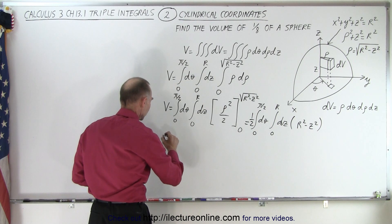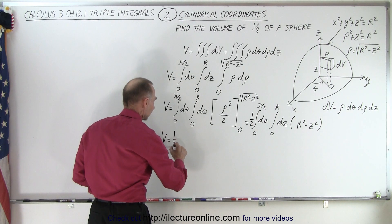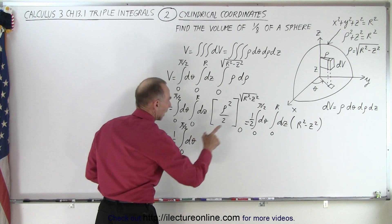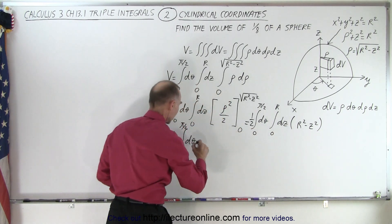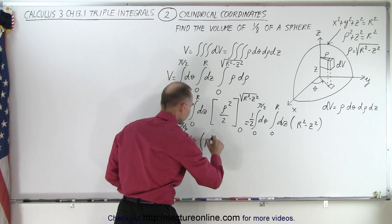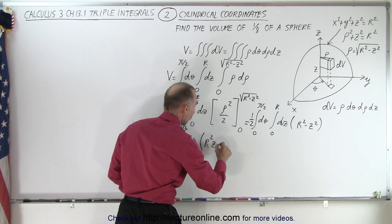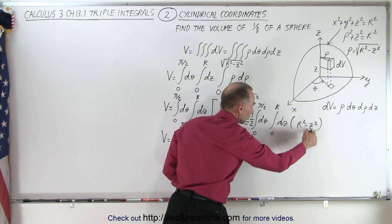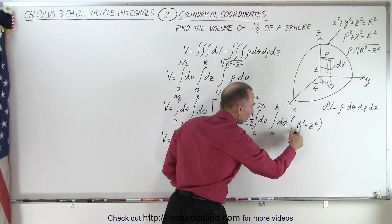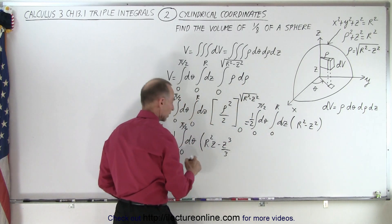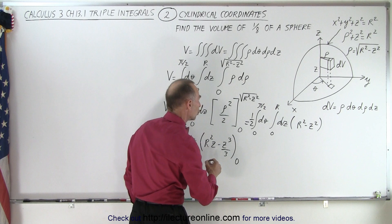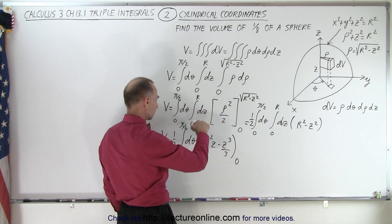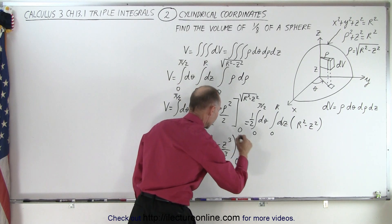So the volume becomes equal to one half times the integral of dθ from 0 to π/2. Integrating over z, we get r²z − z³/3, because when you integrate z², you get z³/3, and r is a constant so r²z is its integral. We evaluate this from 0 to r.